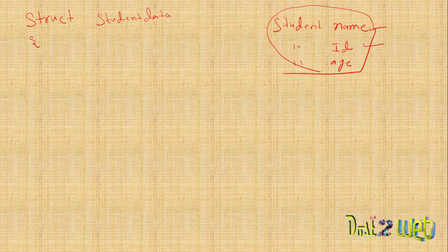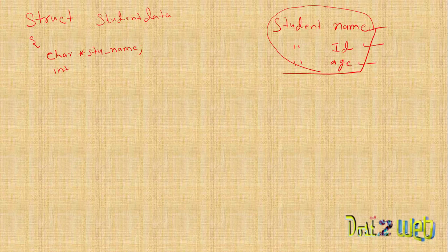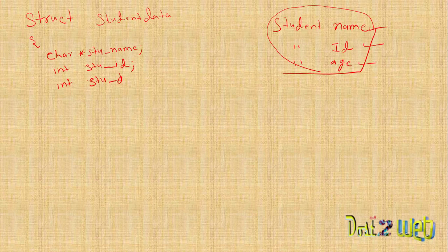Looking at the variables: the name is a string (char pointer), and the ID and age are integers. So I'll define: a char pointer for 'stu_name', then an integer 'stu_id', and then 'stu_age'. At the end, we close the brace with a semicolon to terminate the structure definition.